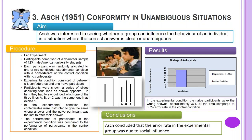The procedure. In a lab experiment, participants comprised a volunteer sample of 123 male American university students. Each participant was randomly allocated to one of two conditions: an experimental condition with a confederate, or the control condition with no confederate.